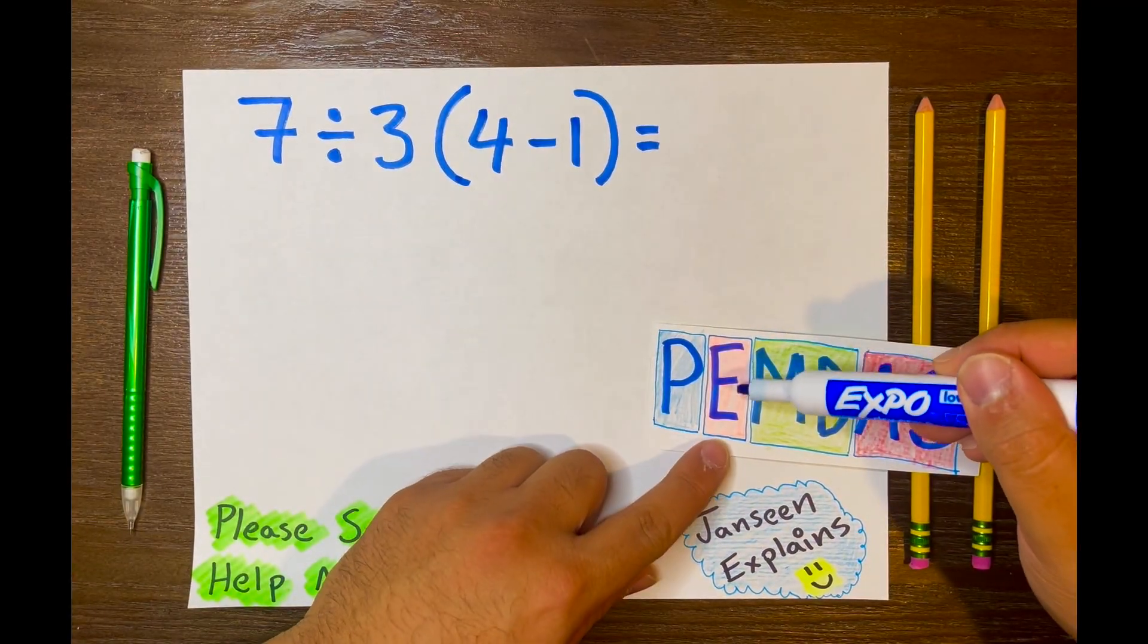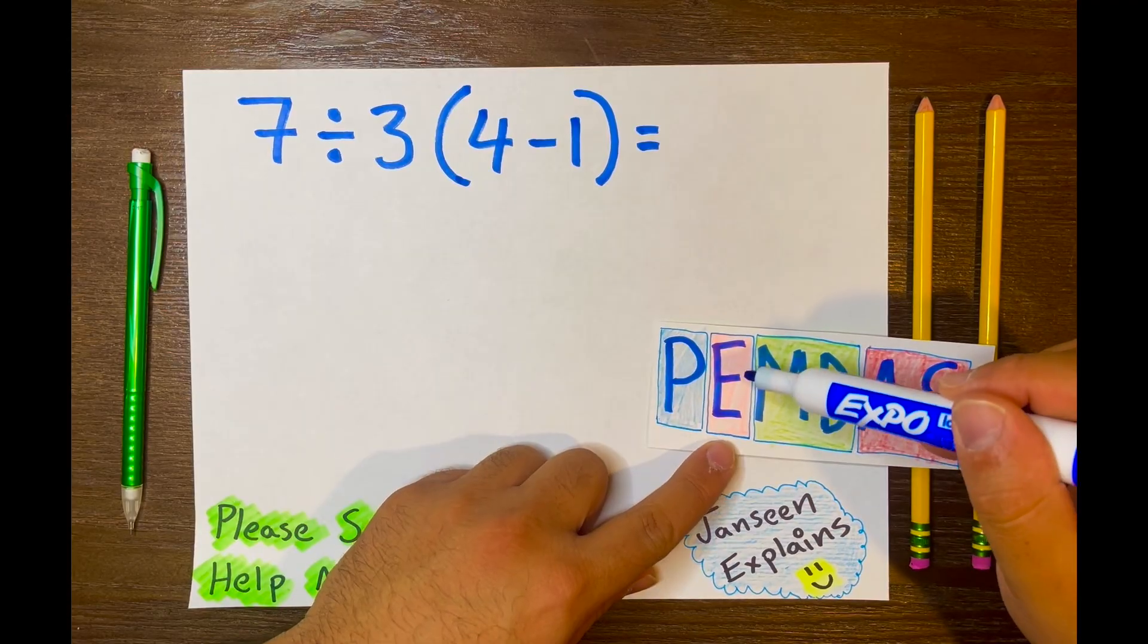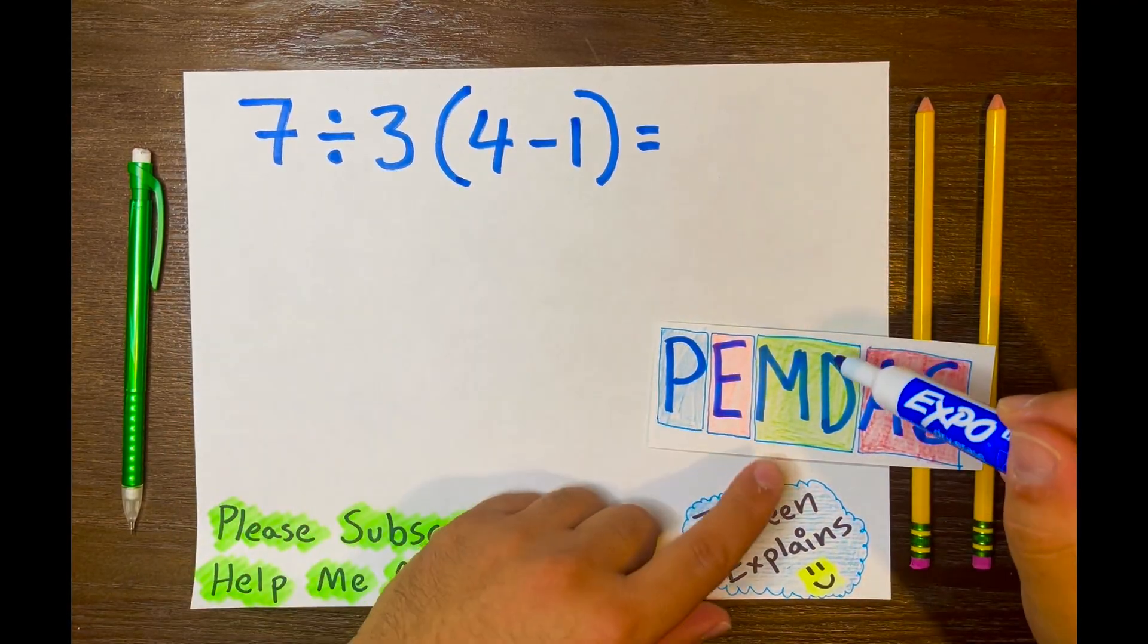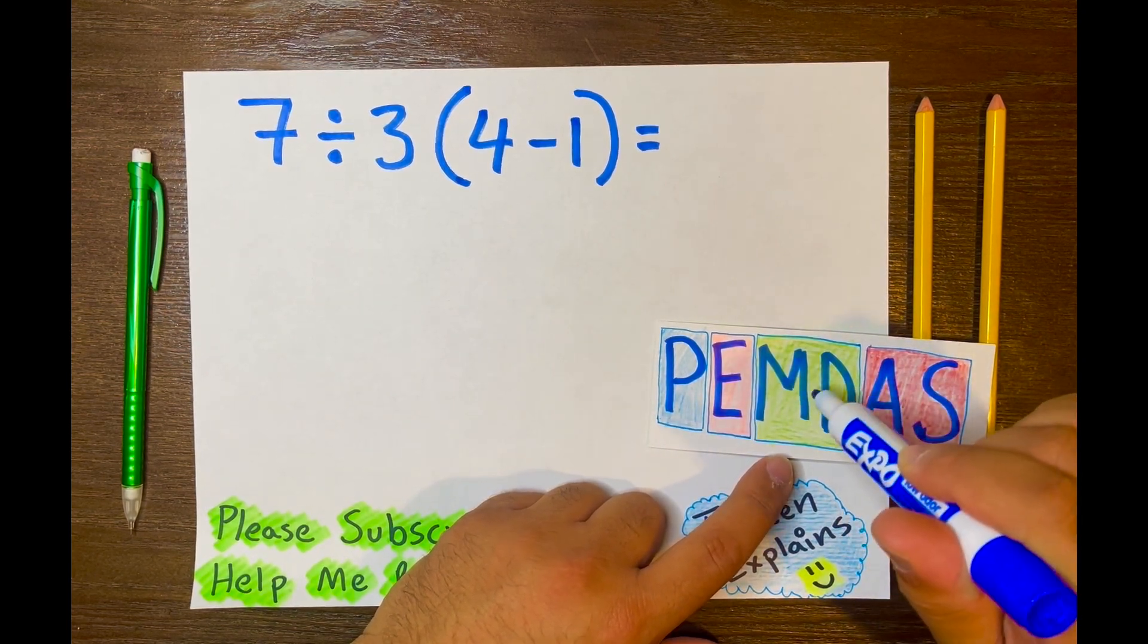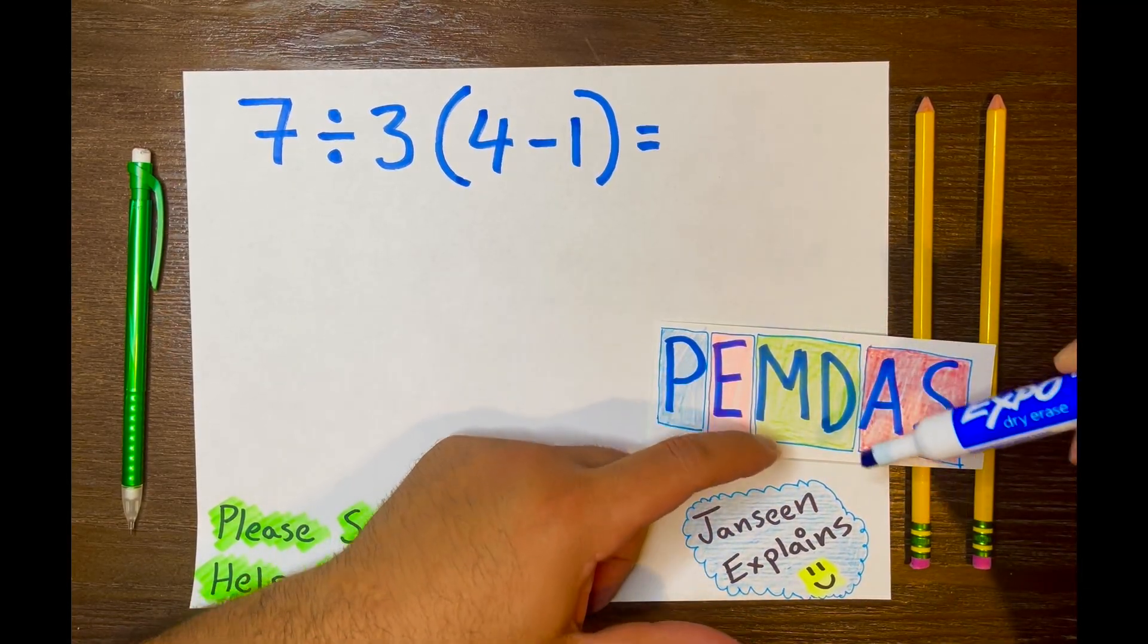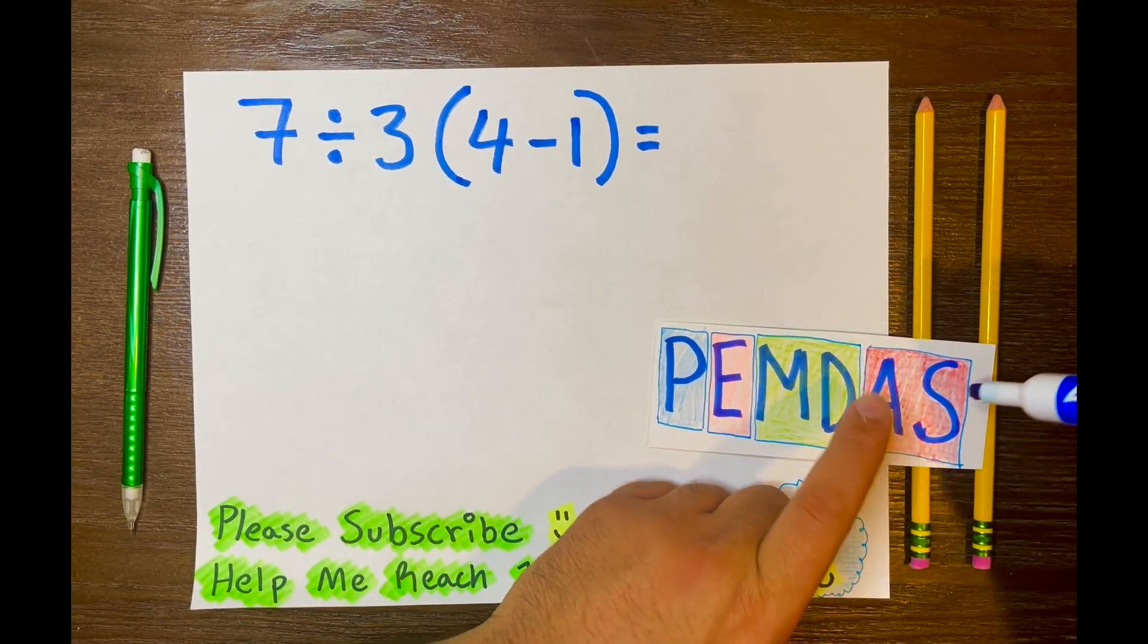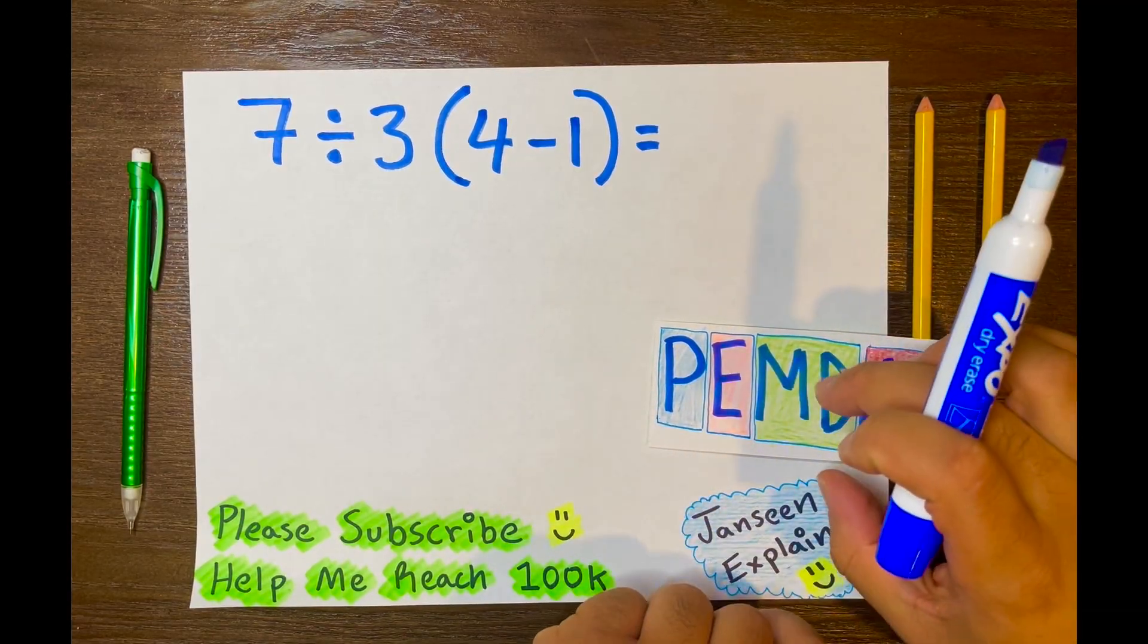Now looking at the next level, E stands for exponents. I don't see exponents. Next level, MD, both operations multiplication and division, that's what the MD stands for. Both operations are within its level, and addition and subtraction are both within its own level. So there are four different levels in PAMDAS.